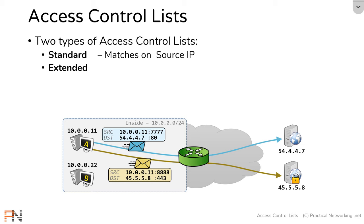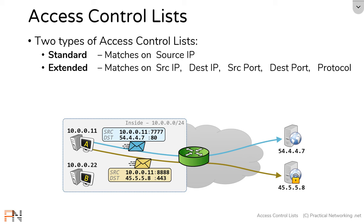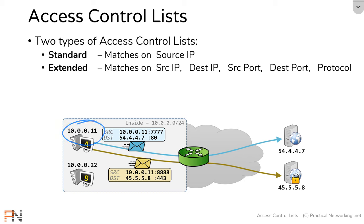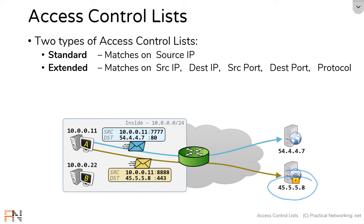That is why an extended access list exists. An extended access list allows you to filter on many more fields — five of them to be exact: the source IP address, the destination IP address, the source port, the destination port, and the protocol. The key benefit is you can create access list entries that allow host A's source IP to speak to one server but deny it from speaking to another server. So you can be much more granular in how you match traffic.